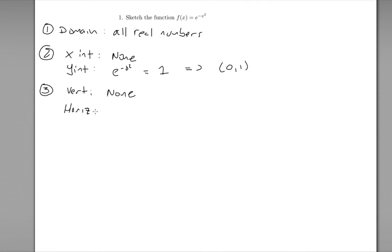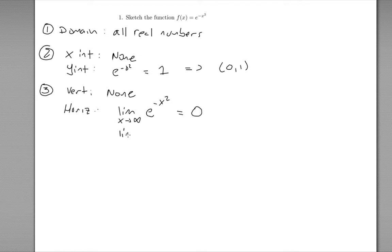For horizontal asymptotes, we take the limit as x goes to infinity of e to the negative x squared. As x gets larger, the exponents get bigger but they're negative, so e to the negative very large numbers gets closer and closer to zero. The same is true as x goes to negative infinity. Both limits give zero, so there is a horizontal asymptote at y equals zero.